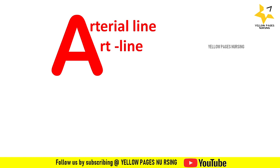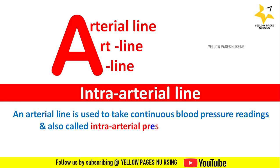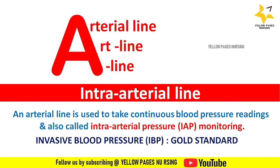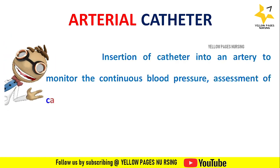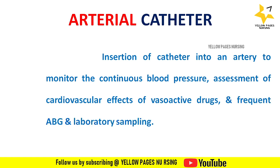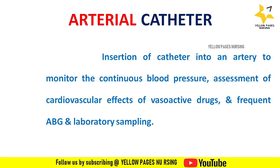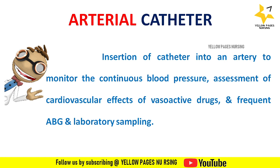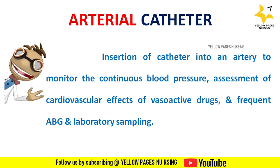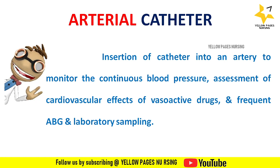Arterial line is otherwise called art line or intra-arterial line. An arterial line is used to take continuous blood pressure readings, also called intra-arterial pressure monitoring. Invasive blood pressure is a gold standard. It is an insertion of a catheter into an artery to monitor continuous blood pressure — systolic, diastolic, and mean arterial pressure — and assessment of cardiovascular effects of vasoactive drugs like adrenaline, noradrenaline, dopamine, dobutamine, etc., and for frequent ABG and laboratory sampling.